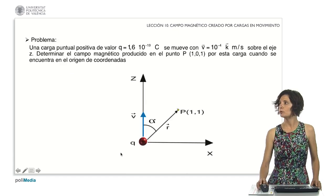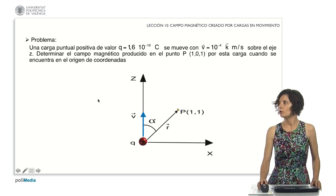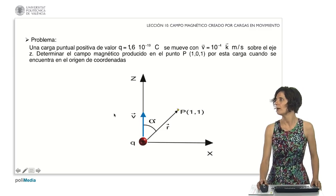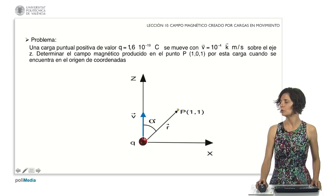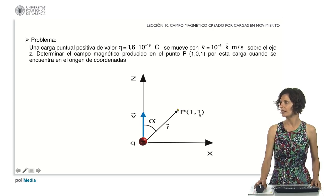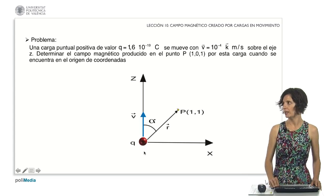Let's solve an example. Consider a positive point charge with a value of 1.6 times 10 to the power of minus 19 Coulombs, moving at a speed of 10 to the power of minus 4 meters per second along the z-axis. We need to determine the field at point P with coordinates x equal to 1 and z equal to 1, when the charge is positioned at the origin of coordinates.